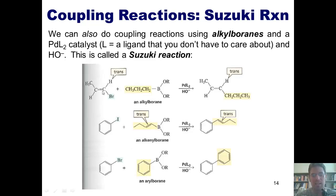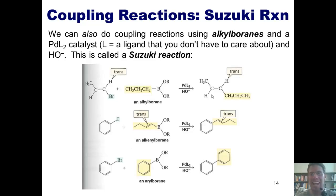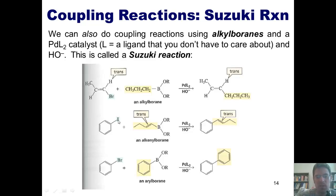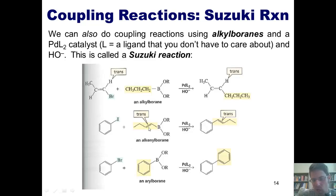Here are some examples. I've got a vinyl halide — a bromine stuck directly to a carbon-carbon double bond — and I react it with an alkyl borane, palladium L2, and hydroxide. Whatever the carbon chain attached to this boron is, that carbon chain ends up replacing the halogen in my final product. Conveniently, the stereochemistry is preserved: the bromine started out trans to the methyl, and the product ends up totally trans — no cis products formed. In another example, I've got a phenyl iodide reacting with a four-carbon alkyl borane; that alkyl chain completely replaces the iodine. Note that the carbon-carbon double bond adjacent to the boron remains completely untouched in the product.